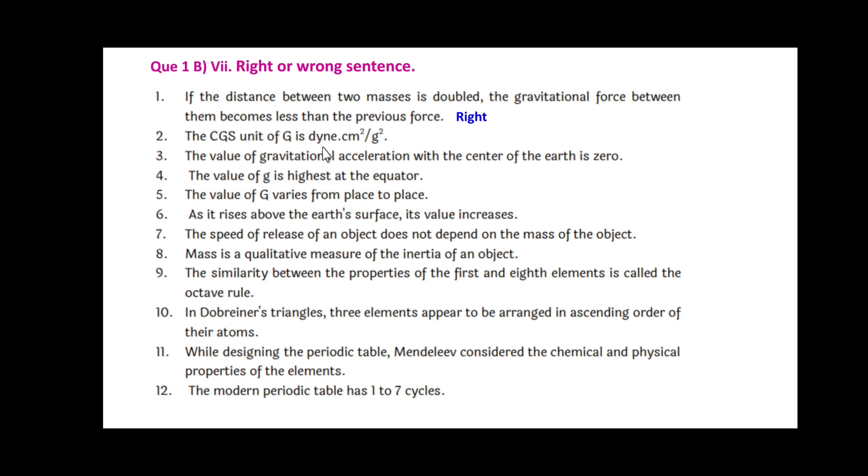The value of gravitational acceleration at the center of the earth is zero. This is right. The value of g, that is the acceleration due to gravity, is highest at the equator. This is wrong.